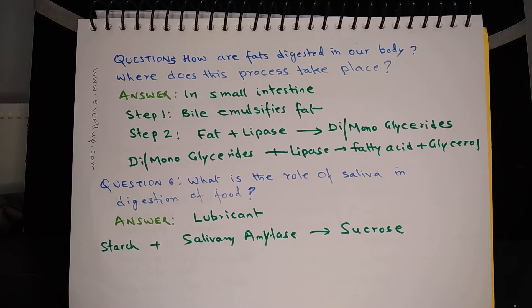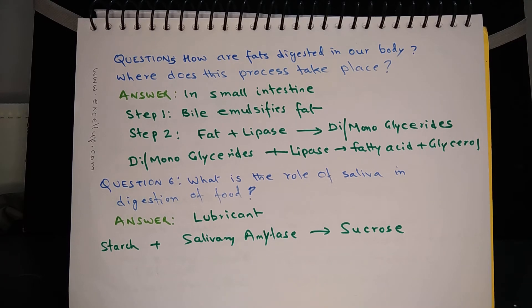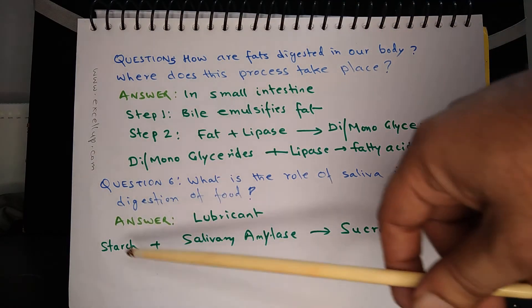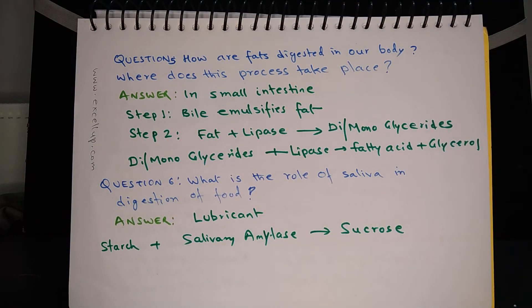But once you take it along with a gulp of water or any other liquid, it becomes easier to swallow the food. So saliva adds more liquid, adds lubricant to the food and it becomes easier to swallow. Then there is an enzyme in saliva and that is called salivary amylase. In some books you will read it as ptyalin also, the spelling is P-T-Y-A-L-I-N. So salivary amylase works on starch and converts starch into sucrose.